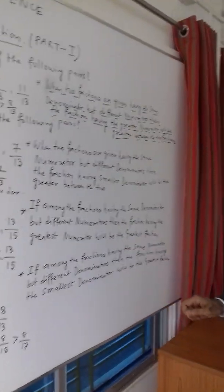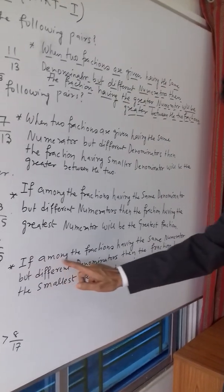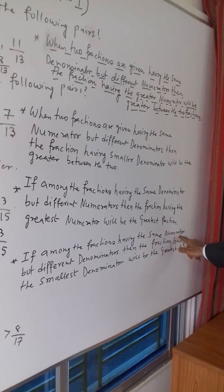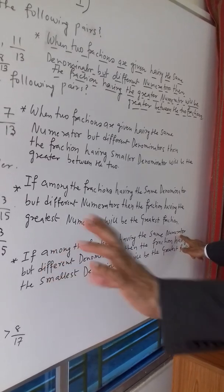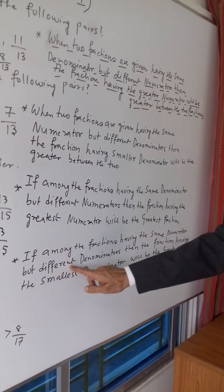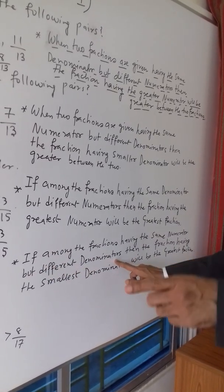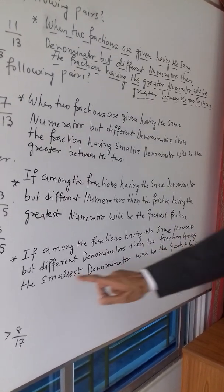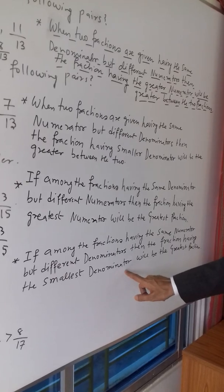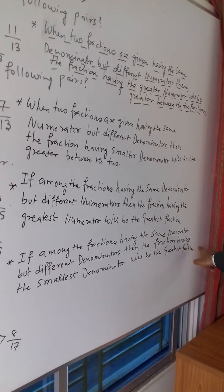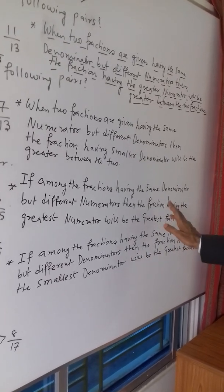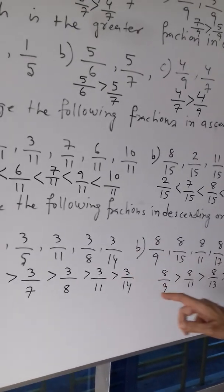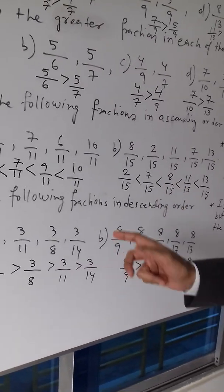Let me repeat rule 2 once again. If among the fractions having the same numerator but different denominators, then the fraction having the smallest denominator will be the greatest fraction.